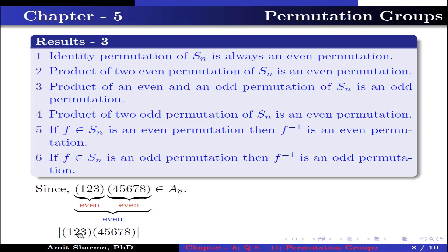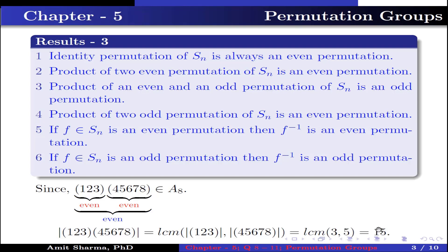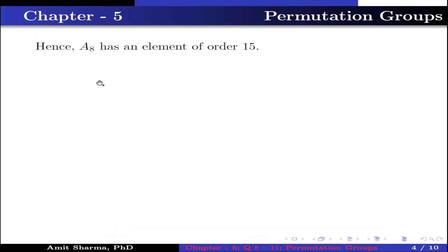The order of the product of permutations (1,2,3) and (4,5,6,7,8) equals the LCM of the order of (1,2,3) and the order of (4,5,6,7,8), because both are disjoint permutations. This equals LCM of 3 and 5, which equals 15. So the order of this permutation is 15. Hence A8 has an element of order 15.